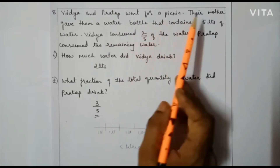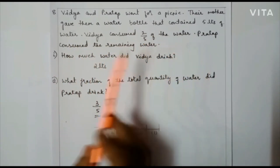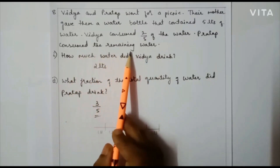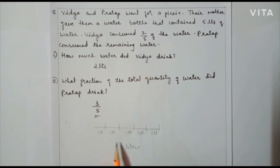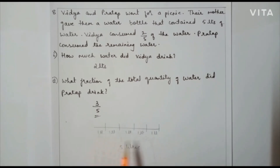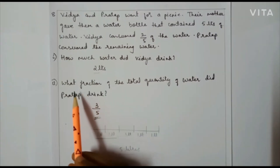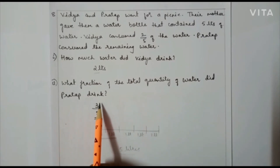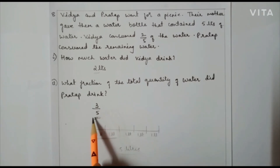Next question: Vidya and Pratap went for a picnic. Their mother gave them a water bottle that contained 5 litres of water. Vidya consumed 2/5 of the water, and Pratap consumed the remaining water. How much water did Vidya drink? The 5 litres is divided into 5 parts, so each part is 1 litre. Vidya consumed 2 out of 5 parts, so she consumed 2 litres. What fraction did Pratap drink? Since Vidya consumed 2/5, Pratap consumed the remaining 3/5 of the water.